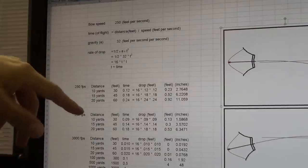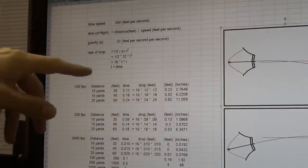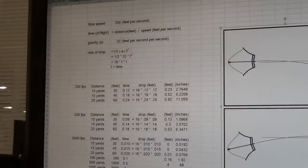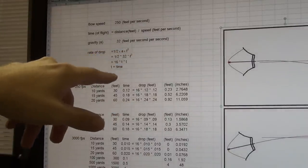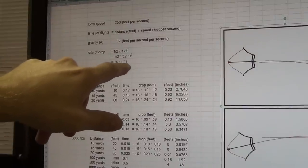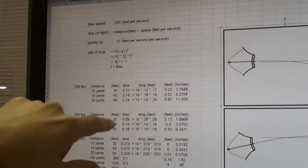And here's a little calculation, it's the rate of drop. It's simple acceleration. This is high school physics, no complex math. It's one-half times acceleration times time squared. Or if you do the math, it's 16 times time times time, where time is the time of flight.